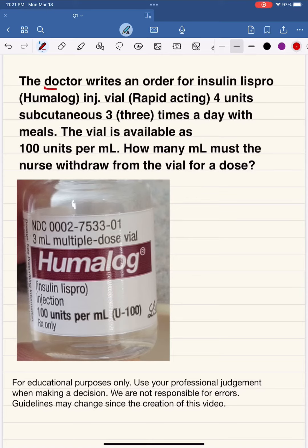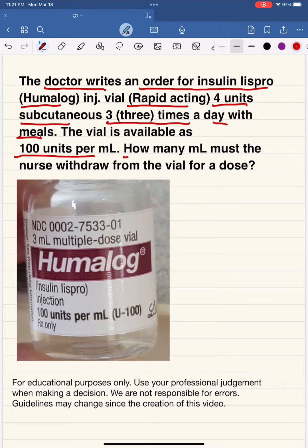A doctor writes an order for insulin Lispro, brand name Humalog — rapid acting, four units sub-q three times a day with meals. The vial is available as 100 units per mL. How many milliliters must a nurse withdraw from the vial for one dose? Always pay attention to the vial — very important. Insulin Lispro is rapid acting and the concentration is 100 units per mL.